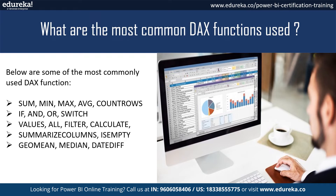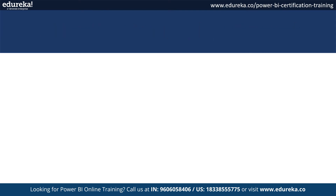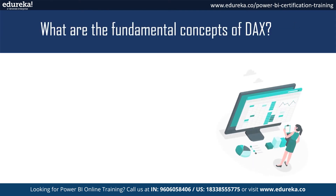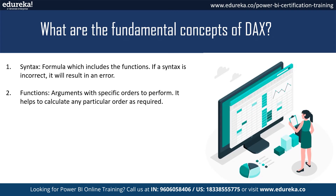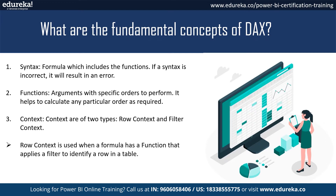What are the fundamental concepts of DAX? First, we have syntax — formulas that include functions. If incorrect, they will return an error. Second, functions are arguments with specific orders to perform calculations. Third, context is of two types: row context and filter context. Row context is used when a formula has a function that applies a filter to identify a row in a table. Filter context is used when one or more filters are applied to get a value.